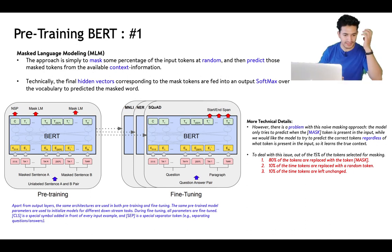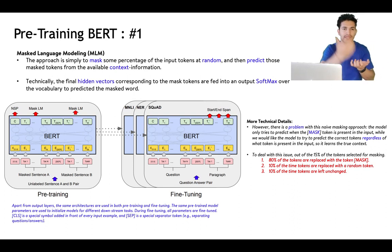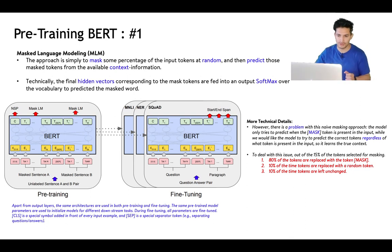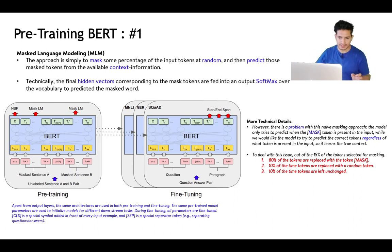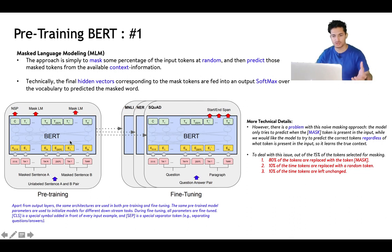For example, given 'love is all that matters,' the word 'love' or 'matters' will be masked and not shown to the network. The network must predict that the masked token is actually 'love.' The encoder generates a hidden encoded representation of each word, and that hidden vector representation can be fed through a softmax to predict which word has the highest probability.